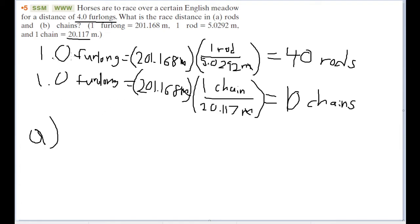So if this is the conversion for one furlong to 40 rods, then 4.0 furlongs is going to be equal to 40 rods times 4, which is going to be equal to 160 rods.